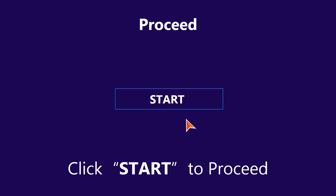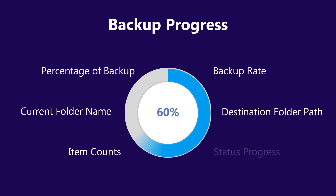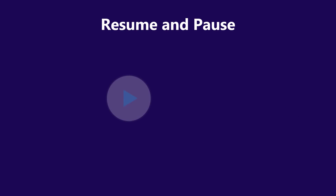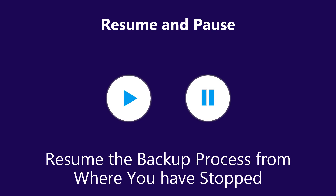Now click on the Start button to proceed with the backup. During this process, you can see the percentage of backup processed, current folder name, item counts, rate, destination folder path, and status progress. You can also pause the backup in between. When you restart the software after pausing, it shows the option to resume the backup process from the point where you stopped.